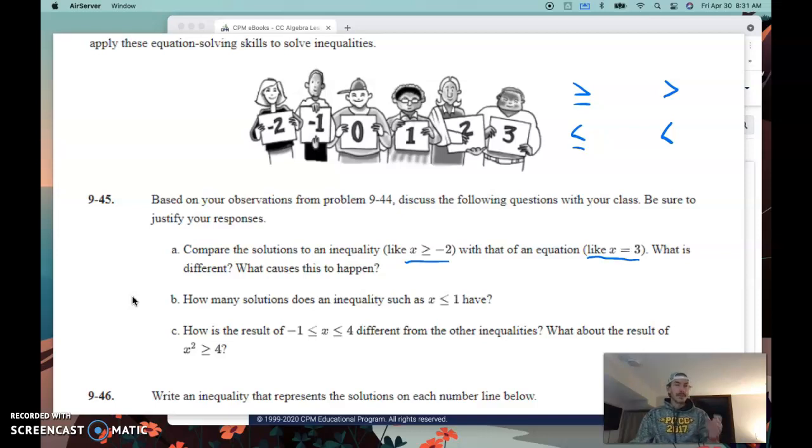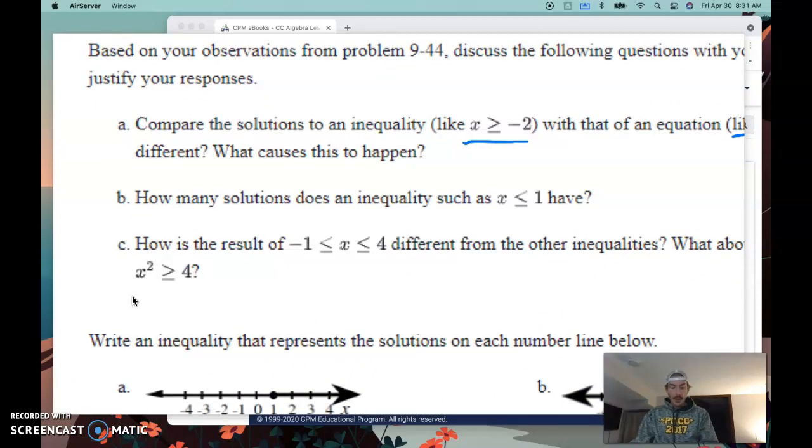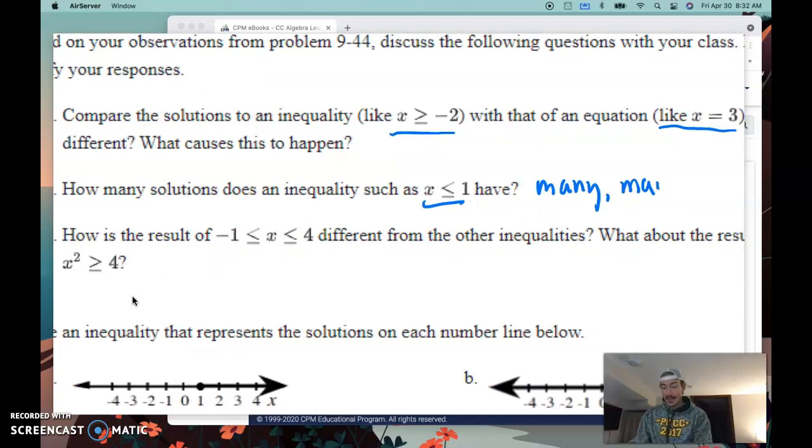If you have a situation where x is greater than or equal to negative 2, that involves many solutions. Which one are we talking about? We don't always know without some context. But what we do know is that there are many, many, many solutions there. Anything bigger than or equal to negative 2.